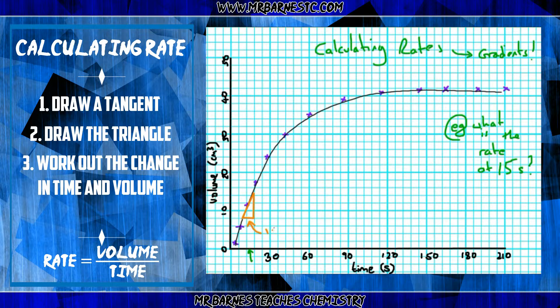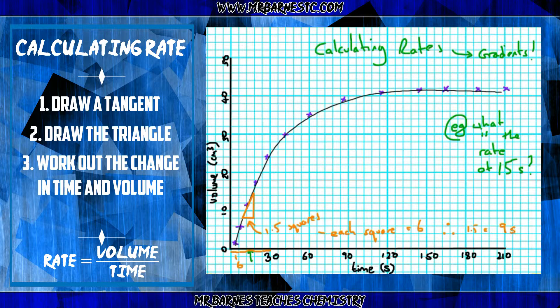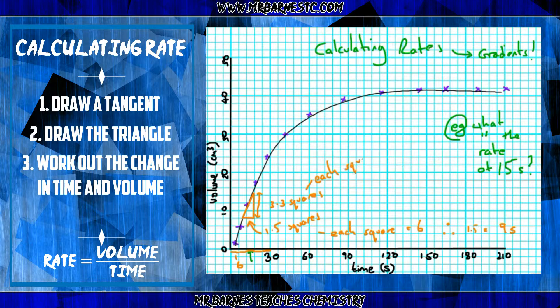So, to start off at the bottom, I've got 1.5 squares, and each square is worth 6 seconds. Therefore, I've got 1.5 times by 6, which is 9 seconds. Now, in that 9 seconds, how much have I produced? Well, I've got 3.3 squares, approximately. If I've got 3.3 squares, each square is worth 2 centimeters cubed. Therefore, I've got about 6.5 centimeters cubed of gas produced.